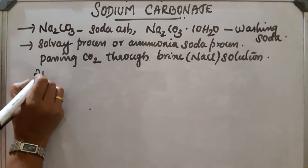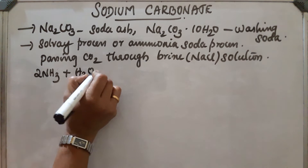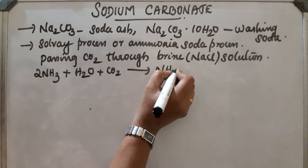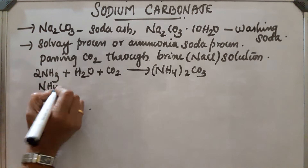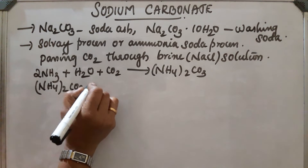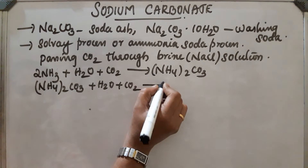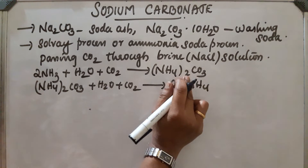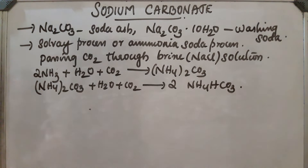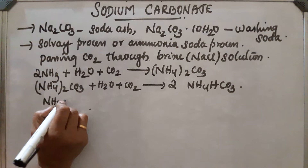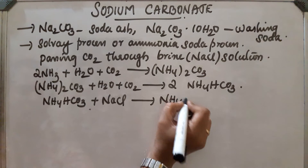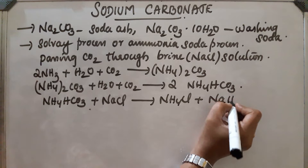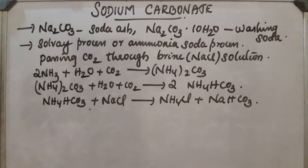The reaction is as follows: 2NH3 + H2O + CO2 gives ammonium carbonate, which then gets converted into ammonium bicarbonate (NH4HCO3). This ammonium bicarbonate then reacts with NaCl by the common ion effect, producing ammonium chloride (NH4Cl) and sodium bicarbonate (NaHCO3).